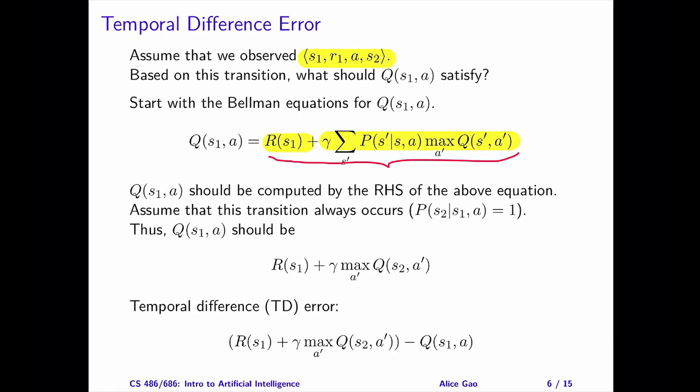Since this is the only transition we have observed so far, let's assume that this transition always occurs. In other words, let's assume that the probability of S2 given S1 and A is equal to 1.